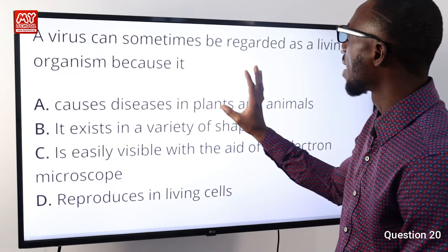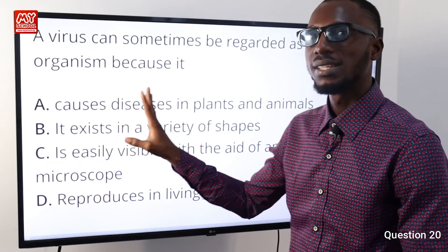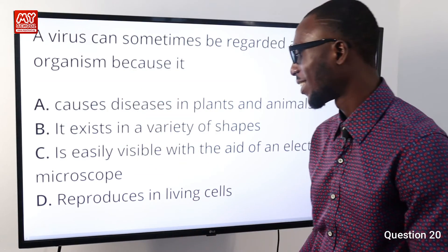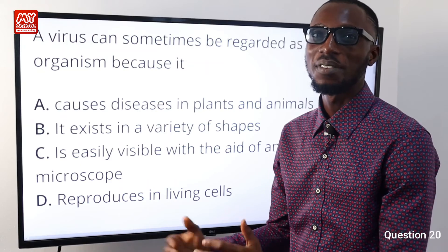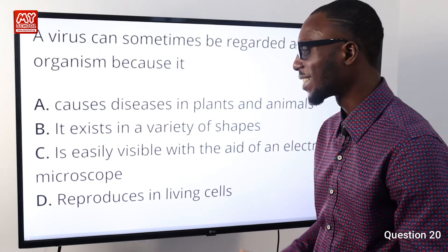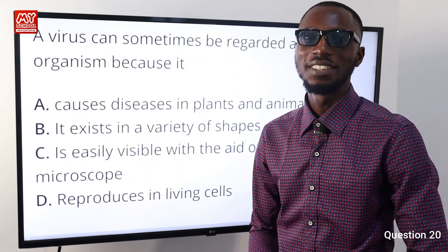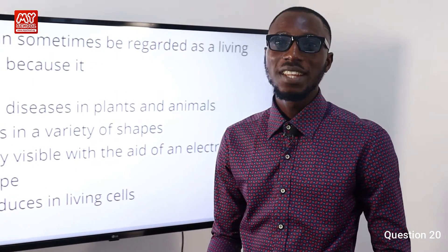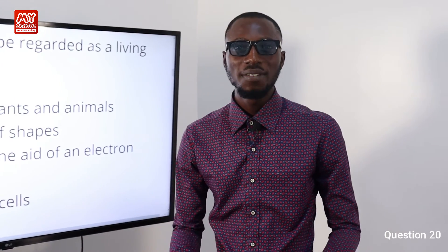Question number twenty: a virus can sometimes be regarded as a living organism because it reproduces in living cells. One of the characteristics of living things is the ability to reproduce its kind, so option D is correct. We've come to the end of this segment, but there is definitely more to come. If you enjoyed this content, please hit the like button, click on the subscribe button, and tap on bell notifications so you can get informed as we release the next videos.